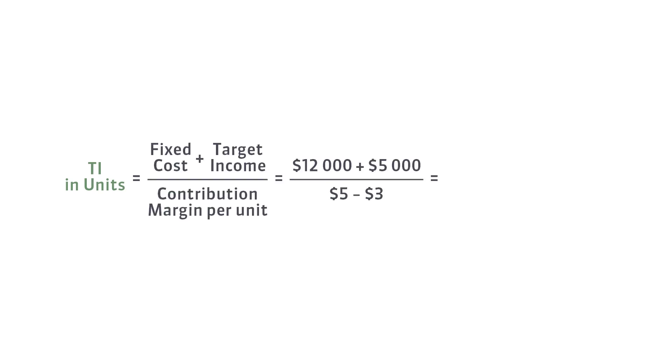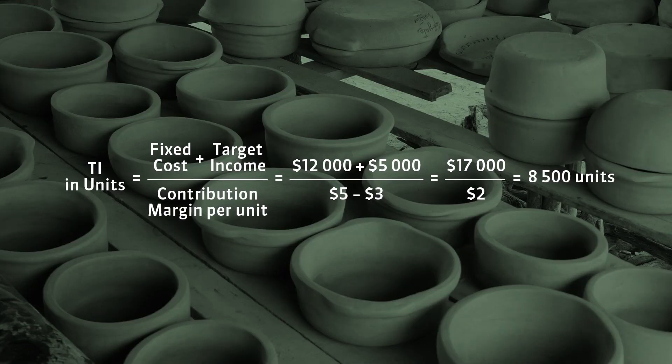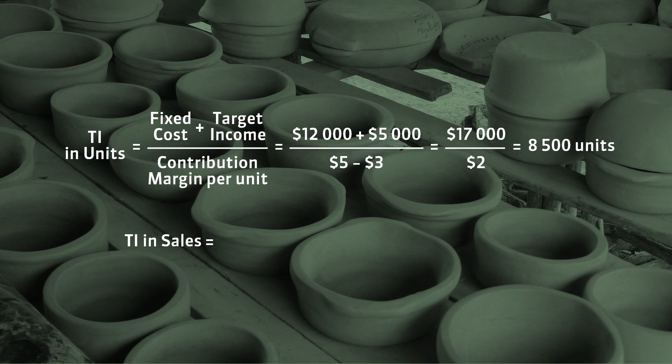Let's put the data into the formula. As you can see, the company has to sell eight thousand five hundred pots to reach an annual operating income of five thousand dollars. Let's also calculate the target income expressed as a sales value.